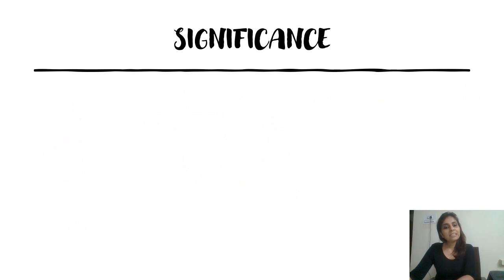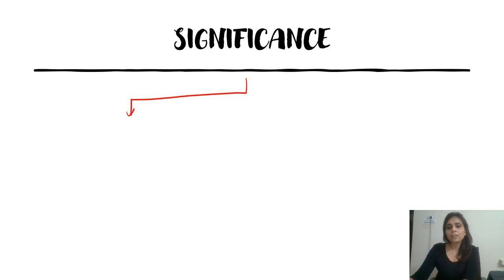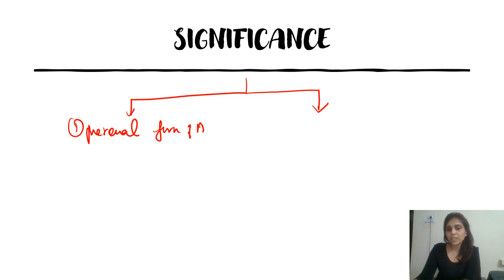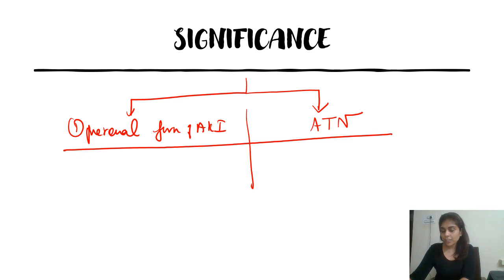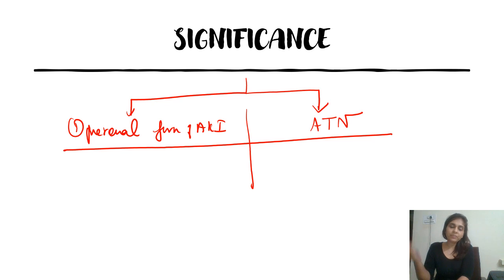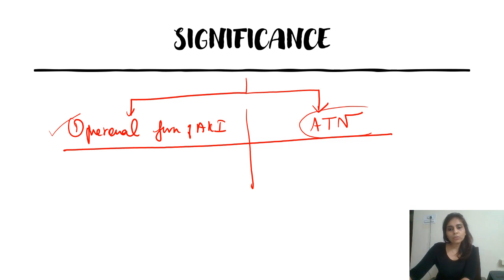What is the significance of fractional excretion of sodium? It helps in differentiating two clinical conditions: the pre-renal form of acute kidney injury from acute tubular necrosis. We need to differentiate these two conditions because both represent different stages of renal ischemia. For any reason, if there is renal hypoperfusion, it initially presents as a pre-renal form of acute kidney injury, then progresses to acute tubular necrosis.